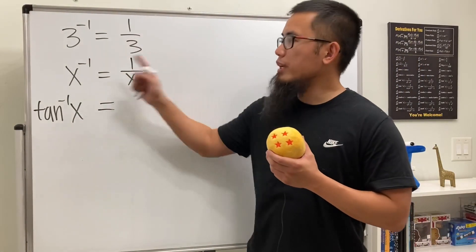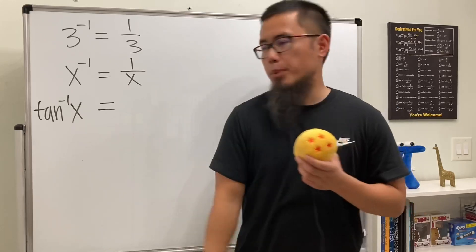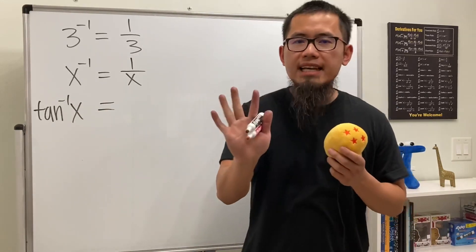Okay, as we all know, when you have 3 to the negative 1, it's 1 over 3, and x to the negative 1 is 1 over x. Now how about when you have tan to the negative 1 of x? I'll give you guys 5 seconds: 5, 4, 3, 2, 1.